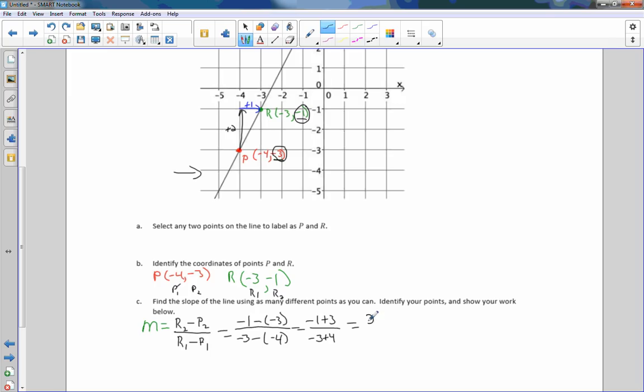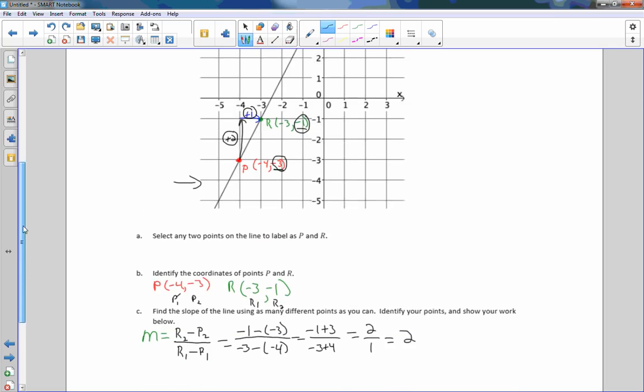So if I take negative 1 minus a negative 3, that's negative 1 plus 3 over a negative 3 minus a negative 4 or plus 4. And negative 1 plus 3 is 2, and that's this number here. And the negative 3 plus 4 is 1. So my slope is 2. And we're going to be doing this more and more, and it might be a little confusing at first, but we will get to the point where this actually becomes quite simple.